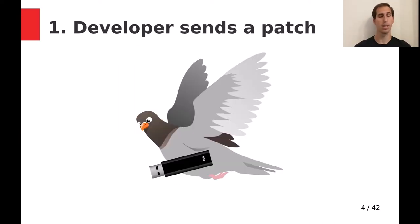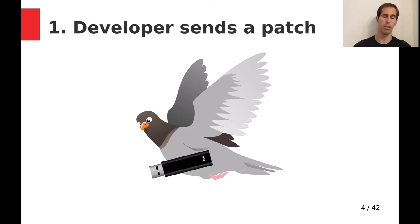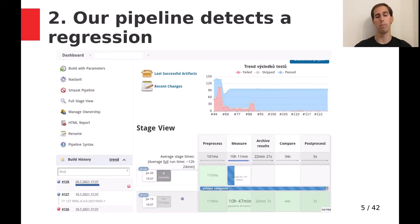So how could the workflow look? Everything starts with a developer who sends a patch; eventually it gets merged and accepted somewhere in a branch, we can detect that, run our pipelines, and hopefully eventually detect a change.